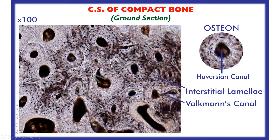These empty canals and canaliculi are filled with air which appear black to brown during microscopic examination. Compact bone is principally made of many Haversian systems, or the osteon. Each Haversian system is a long cylindrical unit lying parallel to the long axis of bone, and each has a central canal known as the Haversian canal. The boundary between Haversian systems is limited by a refractile line known as the cement line.